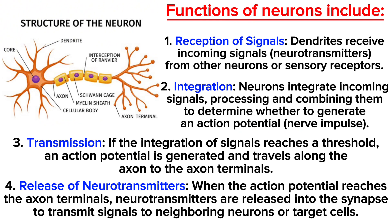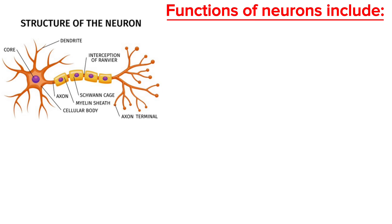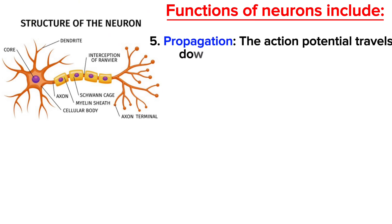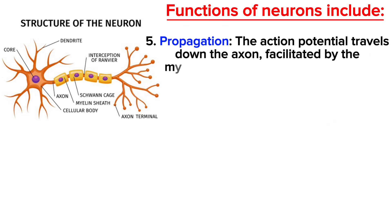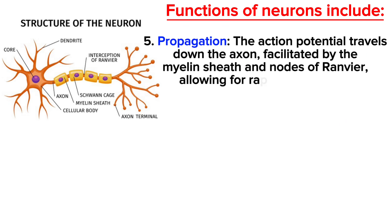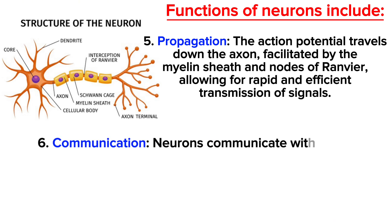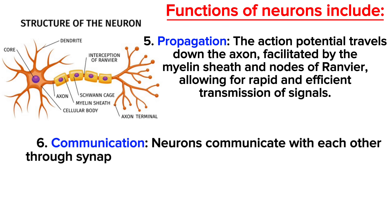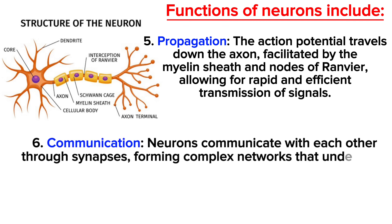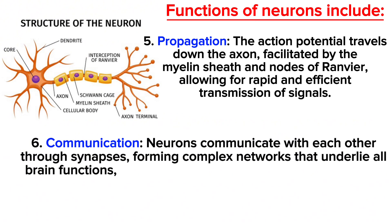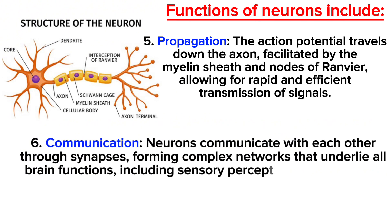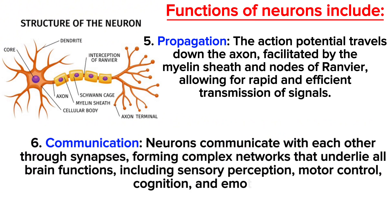The fifth function is propagation — the action potential travels down the axon, facilitated by the myelin sheath and the nodes of Ranvier, allowing for rapid and efficient transmission of signals. The sixth and last function is communication — neurons communicate with each other through synapses, forming complex networks that underlie all brain functions including sensory perception, motor control, cognition, and emotion.